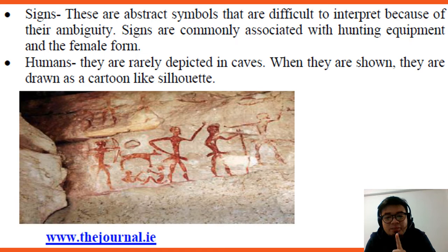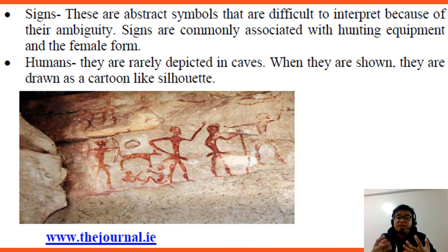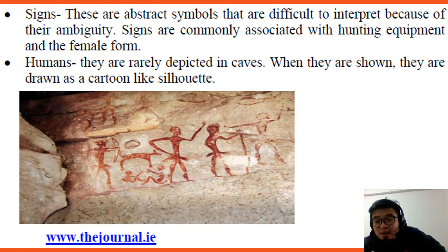Signs are ambiguous because there is no exact interpretation of what they mean. For example, a shape could be interpreted as the number two or as a peace sign. Because it is ambiguous, even if you describe it, it can be understood in multiple ways — it is only a sign.